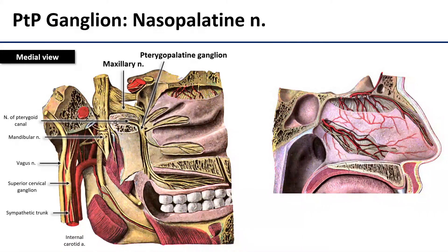The rest of the nerves we'll talk about here are going to be branches from the pterygopalatine ganglion. These are still considered branches of the maxillary nerve — they just originate as the maxillary nerve has joined up with that pterygopalatine ganglion. The nasopalatine nerve is the first of these, and it's one of those wonderfully named nerves that tells you exactly where it's going: to the nasal cavity and to the palate.